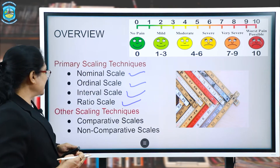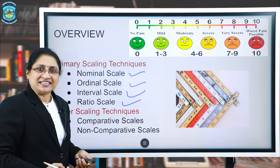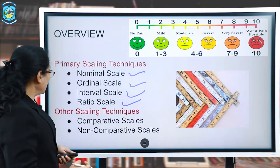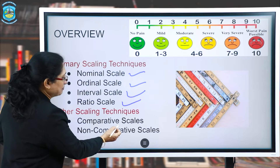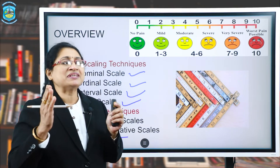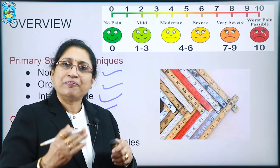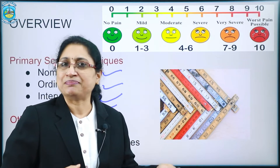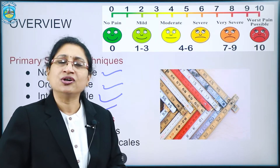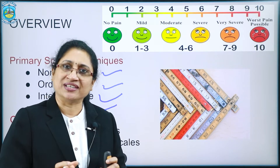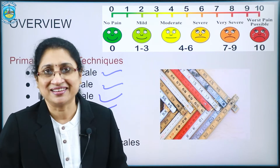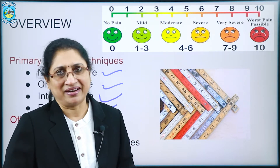Now when you look into the other scaling techniques, which is going to be the major discussion of today, we have comparative scale and non-comparative. With the name itself you come to know — we compare some things, we call it comparative. And if we don't compare, we just work on one particular object and try to identify the goodness or the badness in it — we call it non-comparative.